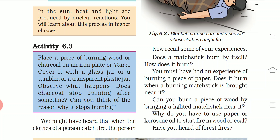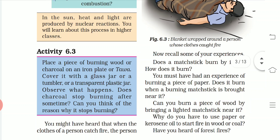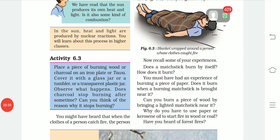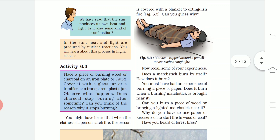In Activity 6.3, place a piece of burning wood or charcoal on an iron plate. Cover it with a glass jar or transparent plastic jar and observe what happens. The charcoal stops burning after some time because the supply of oxygen is cut off. This is the same reason why, when someone is on fire, a blanket is used rather than water — it cuts the supply of air and extinguishes the flame.